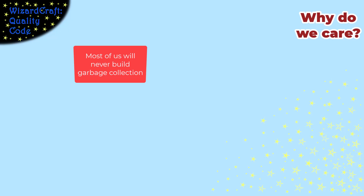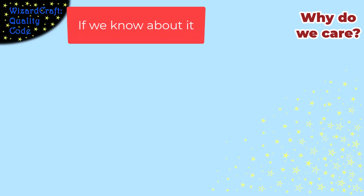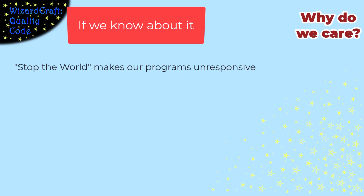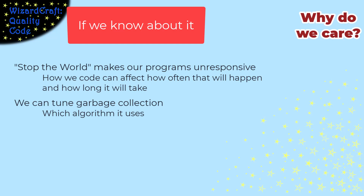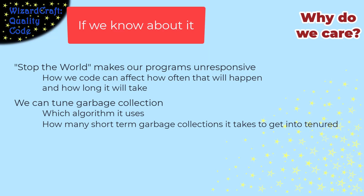Garbage collection comes for free in most systems that have it, so why is it important to understand? First, you need to know about the stop-the-world pause and how your memory usage affects how often it happens and how long and disruptive it is. Second, there are parameters you can tune to control garbage collection. In Java, you can pick between different GC algorithms and specify parameters for how they run — for example, how many times something must sit in survivor before moving to tenured, or how big the survivor and tenured spaces should be. Understanding the philosophy and strategies of garbage collection lets you tune it so your system experiences the least disruption possible.